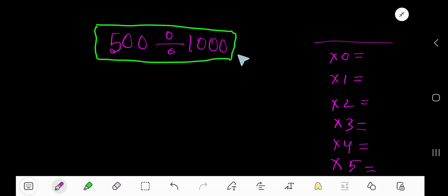500 divided by 1000. Divide 500 by 1000. 1000 goes into 500 how many times? Zero times, as 500 is less than 1000. Zero times 1000 is zero. If you subtract, then you will get 500.